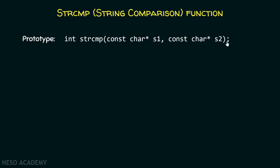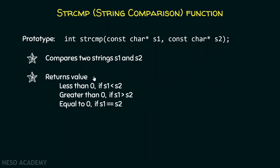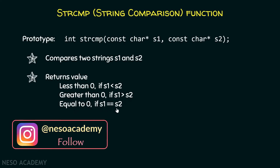We have two pointers here, and the string comparison function is used to compare these two strings, s1 and s2. It returns a value less than zero if s1 is less than s2, a value greater than zero if s1 is greater than s2, and a value equal to zero if s1 is equal to s2.